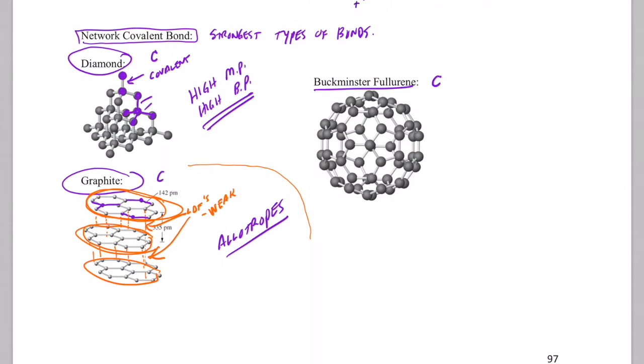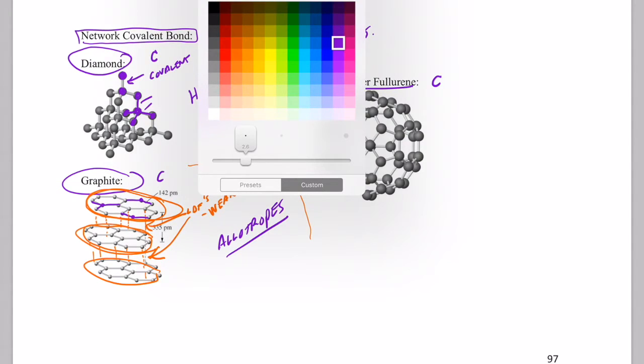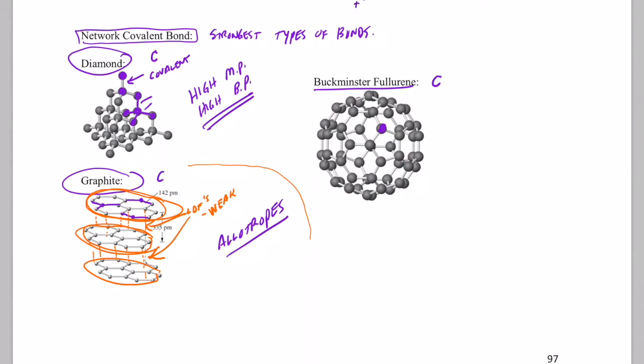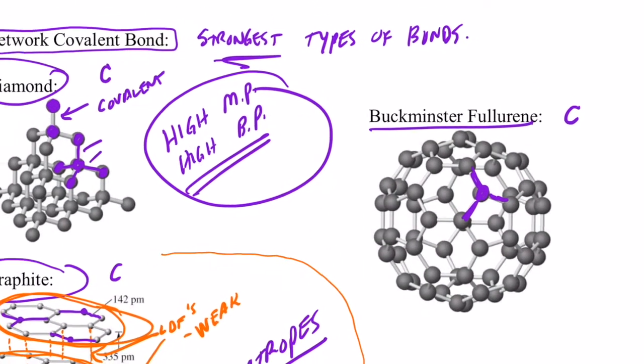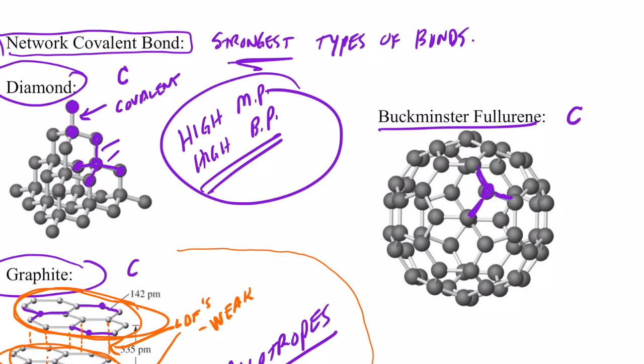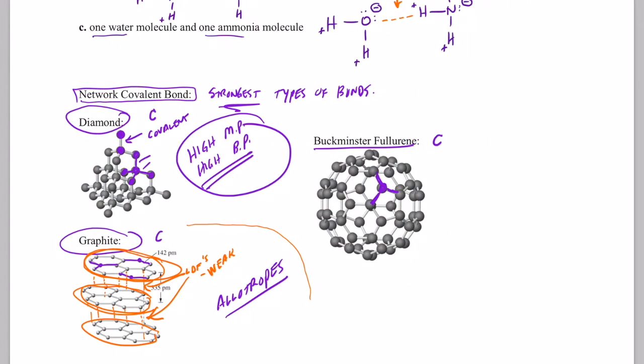All right. In Buckminster fullerene, you can see if you were to take a look at this molecule here. This carbon atom is covalently bonded to these here. So those are all network covalent. Those are the strongest of all. And these guys have very high melting points, very high boiling points. And they do not evaporate easily at all.